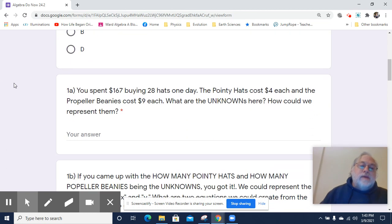So apparently you had some impulse buying going on, and you spent $167 on 28 hats one day. The pointy hats that you bought cost $4 each, and the propeller beanies cost $9 each. What are the unknowns here? How could we represent them? Well, the unknowns are how many pointy hats there are and how many propeller beanies there are.